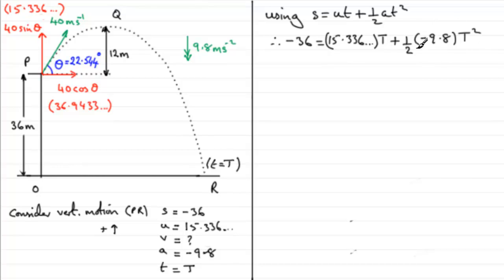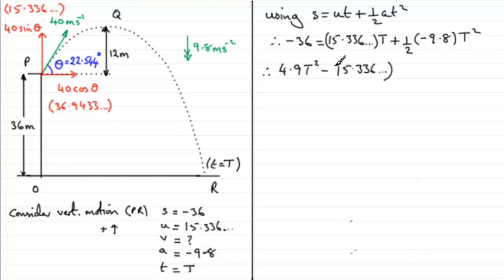This gives a quadratic equation. The half times 9.8 gives 4.9, and we rearrange to make it equal zero by adding 4.9T² to both sides: 4.9T² minus 15.336T minus 36 = 0. We'll use the quadratic formula to solve this.